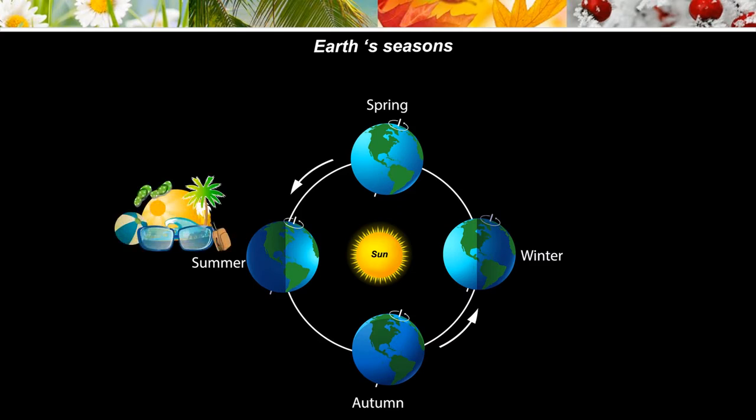Typically, in summer, the weather is usually warm. Trees have full green leaves and the amount of time it is light during the day is longer. In autumn, the amount of time it is light becomes less. The leaves start to change colour and fall off the trees.